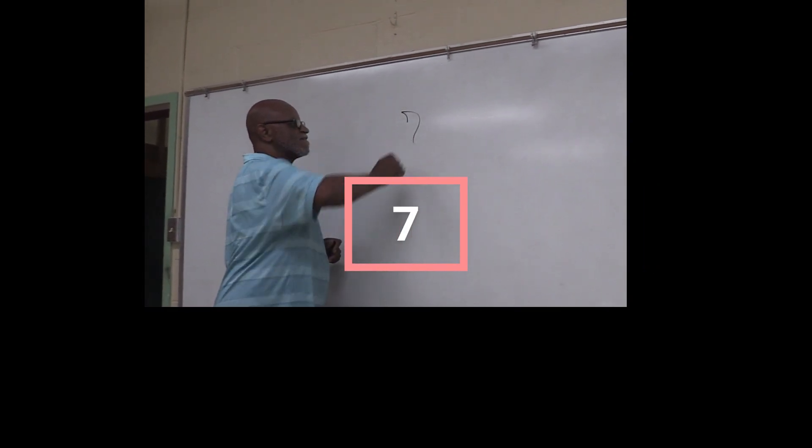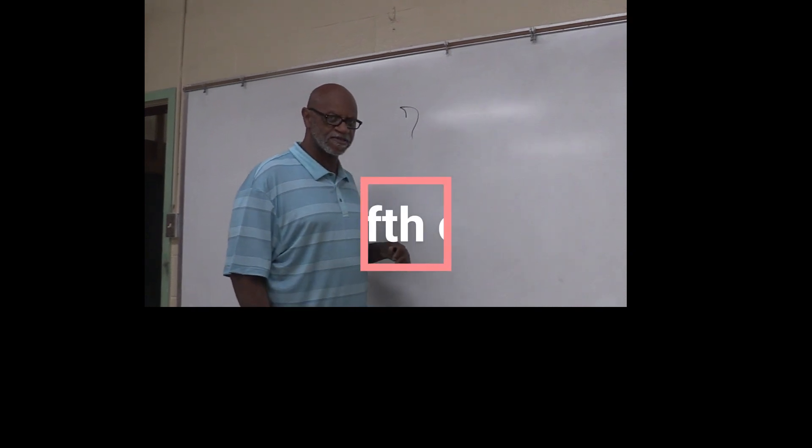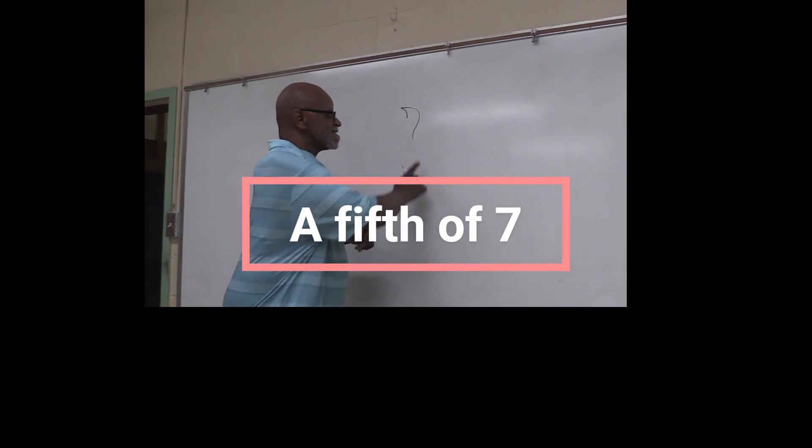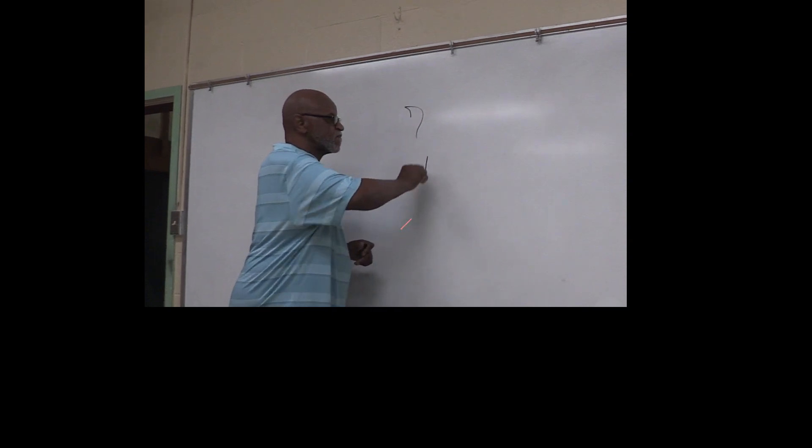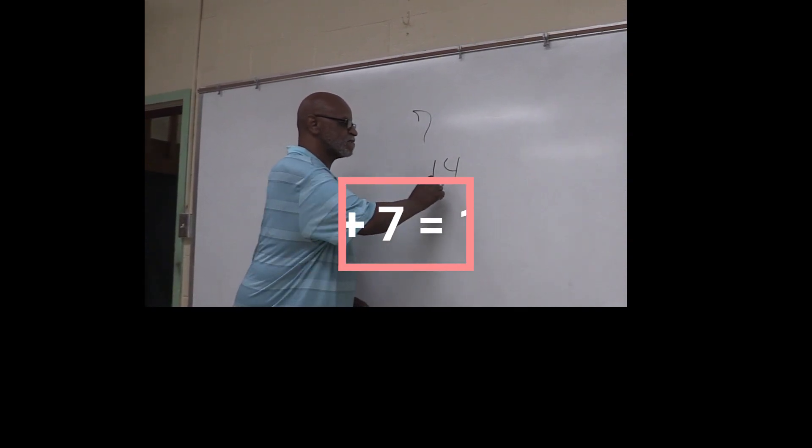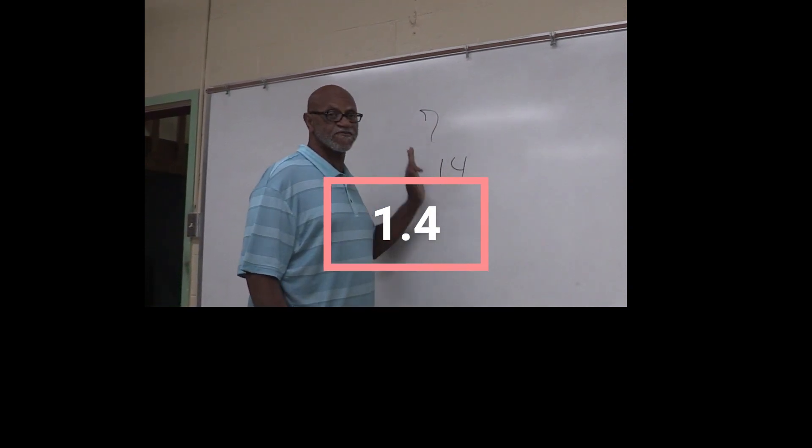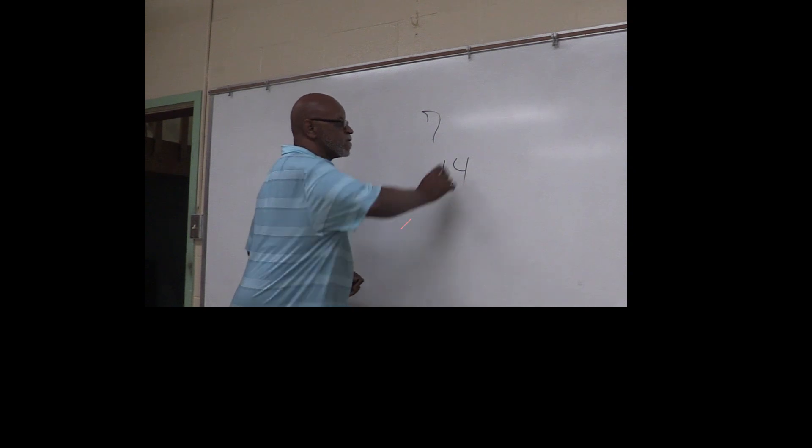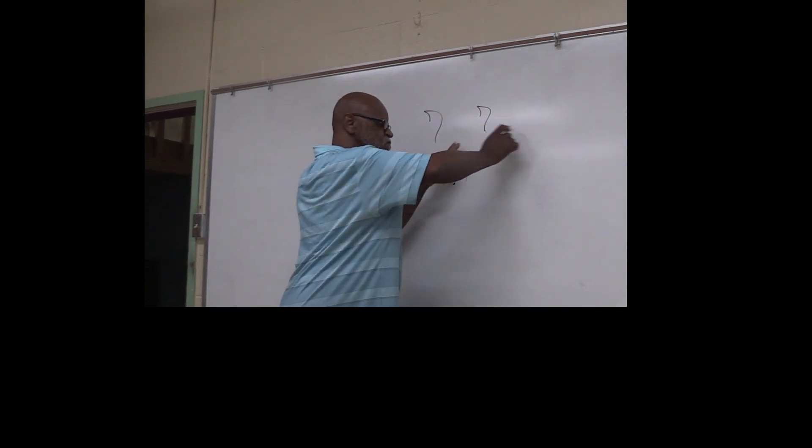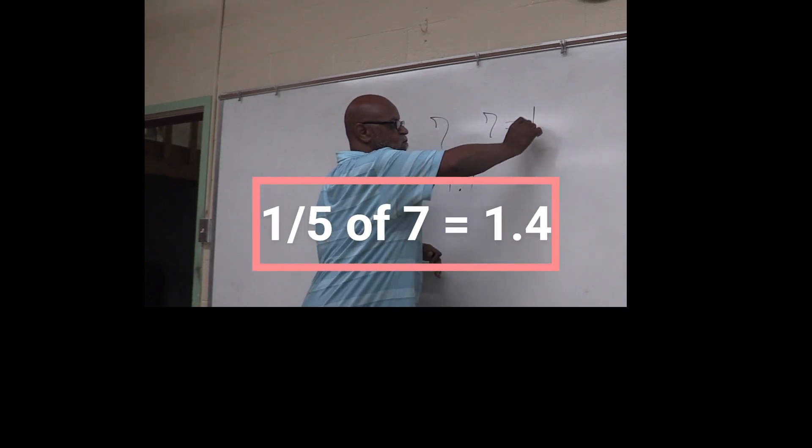Let's use seven for example. I want to know what is a fifth of seven. The first thing you're going to do is double this number, which is 14. Now I'm going to put a decimal in between these two digits. So here we have seven - we just learned that a fifth of seven is 1.4.